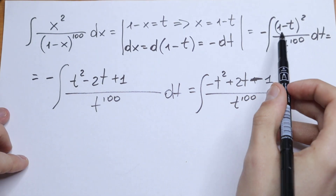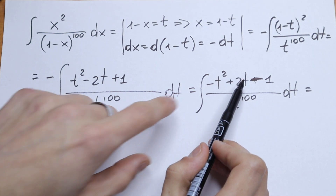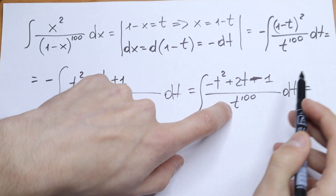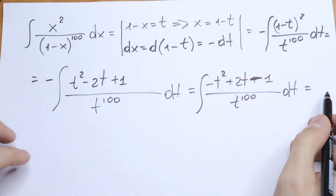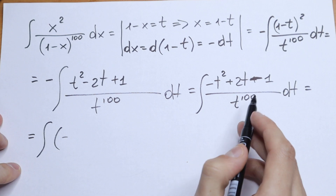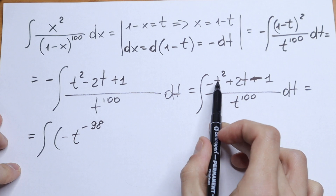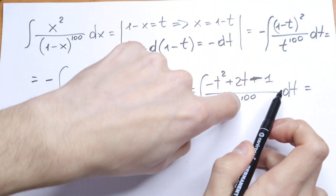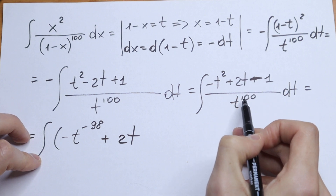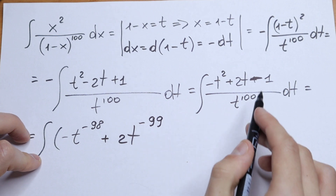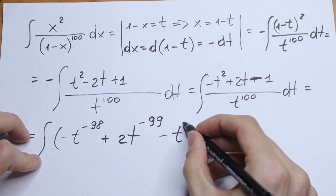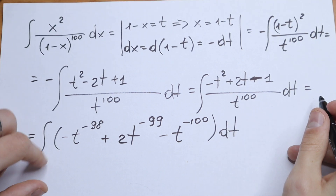Now let's divide the numerator by parts. We divide minus t squared by t to the power 100 to get minus t to the power minus 98. Then plus 2t divided by t to the power 100: using 1 minus 100 we get plus 2t to the power minus 99. And minus 1 divided by t to the power 100 gives us minus t to the power minus 100. So we integrate this sum dt.